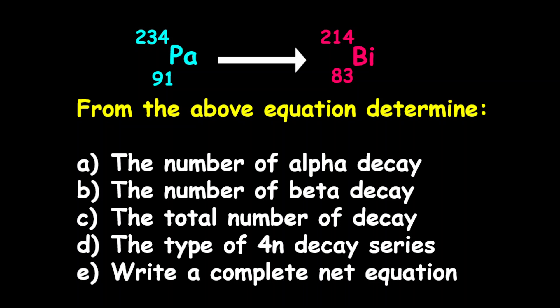What they want us to find is the number of alpha decay, the number of beta decay, the total number of decay, the type of 4n decay series, and to write a complete net equation.